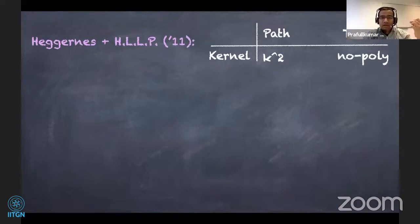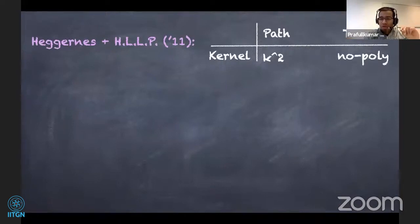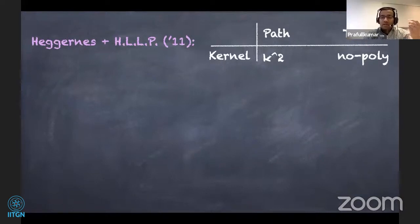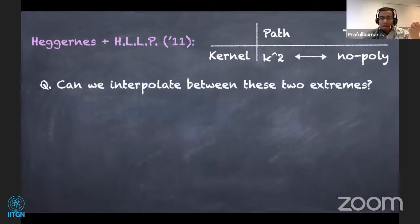Let's look at the first paper — Heggernes et al. in 2011 — where they proved that path contraction admits a polynomial kernel but tree contraction does not admit a polynomial kernel. A natural question is why this gap exists. Can we interpolate between these two extremes? With this aim in mind, we can define this class of trees which we call bounded trees.